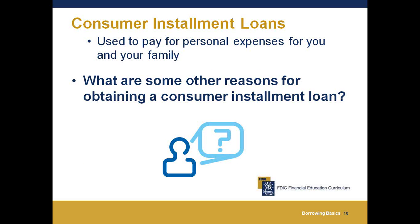A consumer installment loan is used to pay for personal expenses. Examples include an auto loan, where the automobile is used as collateral. There are also unsecured loans for short-term needs, such as buying a computer. For instance, I took out a short-term unsecured loan when four of my kids needed braces at the same time — if I didn't pay the loan, hopefully they wouldn't come and take the braces out of my kids' mouths, but it was an unsecured loan.